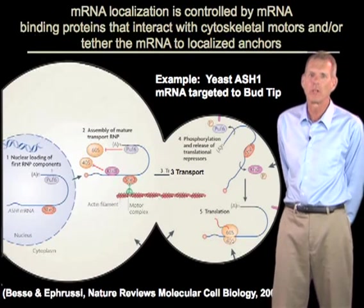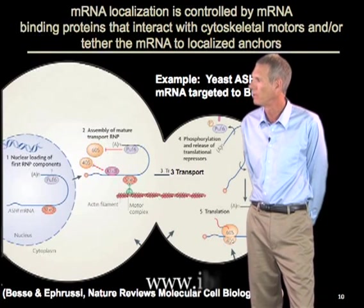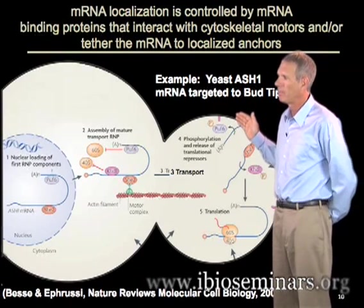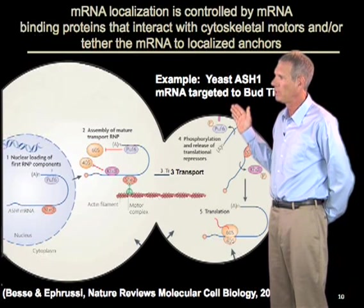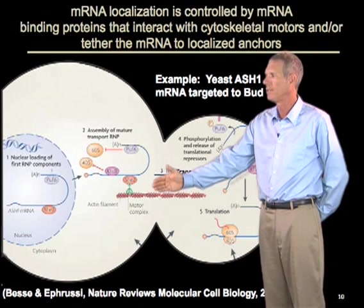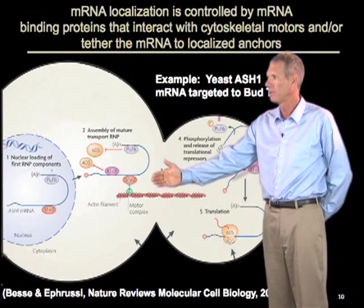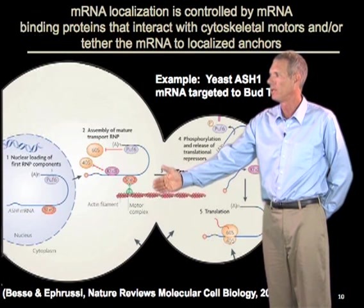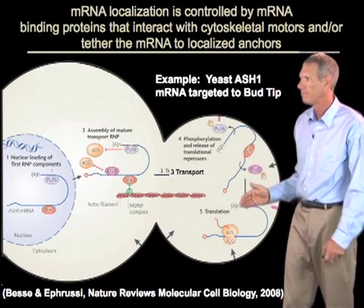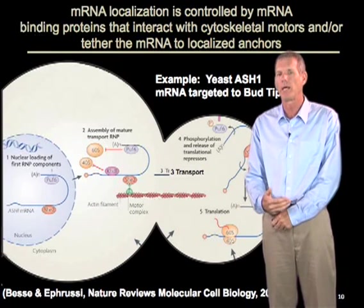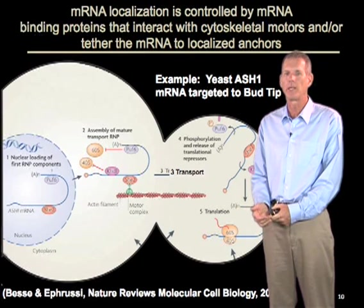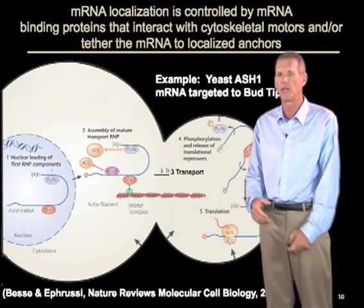An important question is where does the specificity for localization of mRNAs come from? Using the example of yeast ASH1 mRNA, which is targeted to the bud tip: the basic principle is that specificity for transporting this RNA to the bud tip is found in RNA-binding proteins which bind to the RNA and then attach it to cytoskeletal motors. In this particular RNA, the She2 protein binds to the message and then interacts with a motor complex which moves along actin filaments so that it reaches the bud tip. RNA-binding proteins bind to localized RNAs and target them to specific regions — in many cases by interacting with cytoskeletal motors, but in some cases by interacting with anchors localized to certain parts of the cell.